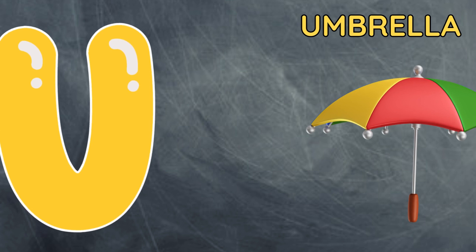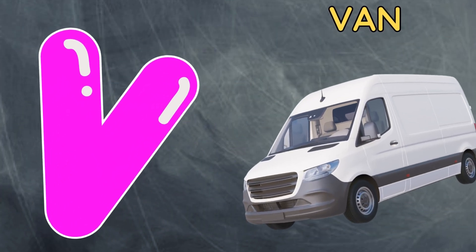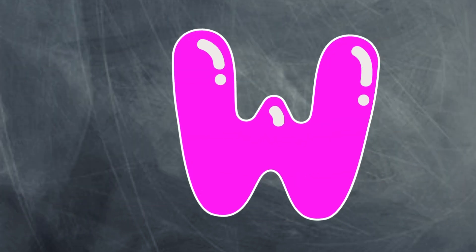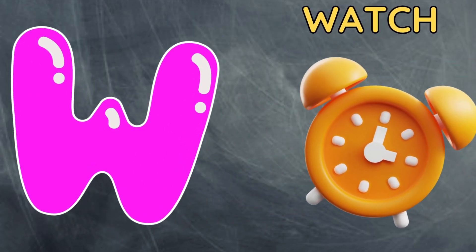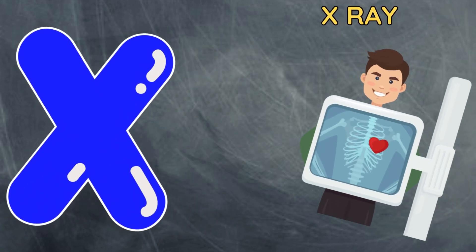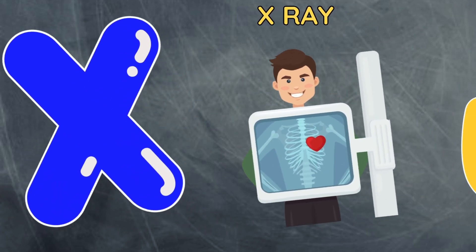U is for umbrella, u-u-umbrella. V is for van, v-v-van. W is for watch, w-w-watch. X is for x-ray, x-x-x-ray.